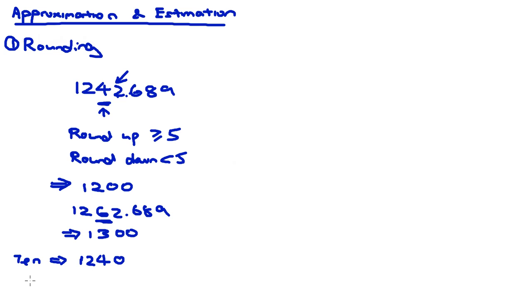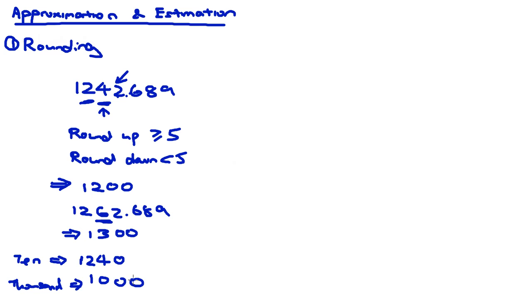Similarly, if you round off to the nearest thousand, you look at the hundreds digit. In this case, the hundreds digit is 2, which is less than 5, so rounded off to the nearest thousand the answer is 1000.